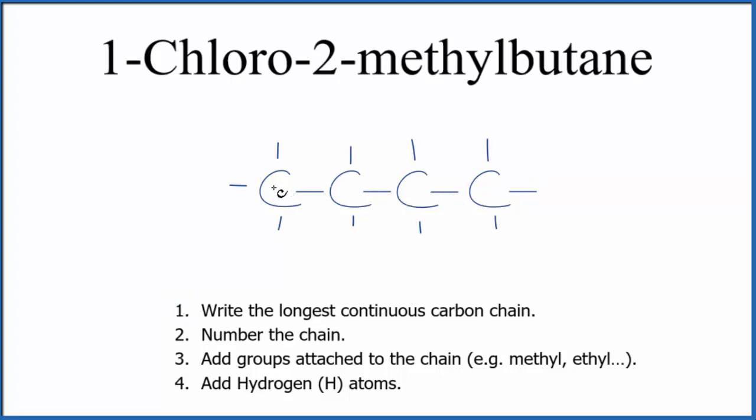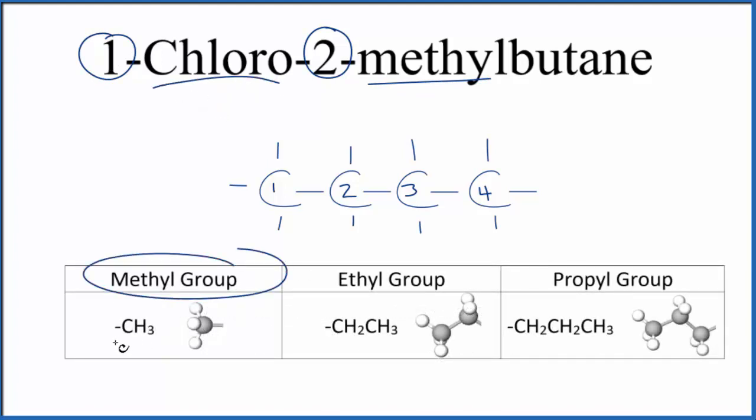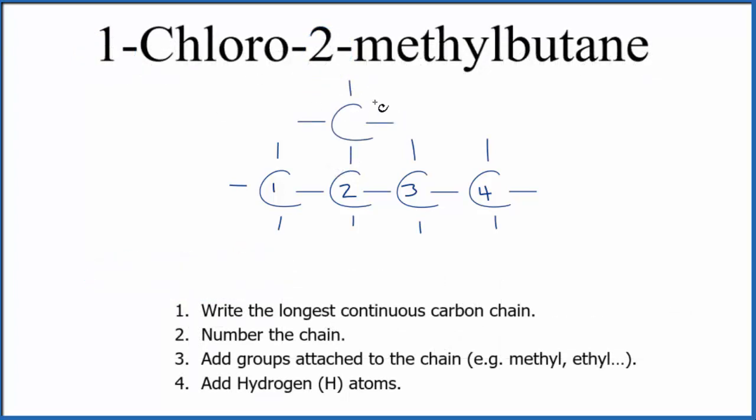Now we're going to number the chain. So we should note that on the second carbon, we have a methyl group. And on the first carbon, we have a chloro group. The methyl, that's just CH3 attached to that second carbon. We have a carbon and three hydrogens. So let's put the methyl group on the second carbon. So there's our methyl group there on the second carbon.